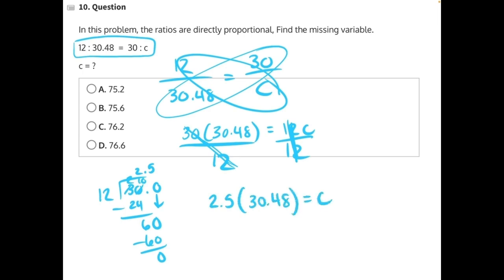From here, there's two different ways you could do it. One way is you could break apart 30.48. So you could do 2.5 times 30, and 2.5 times 0.48, and then add whatever two numbers you get together.